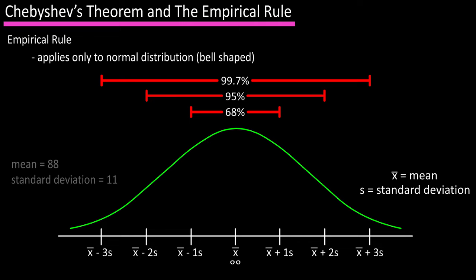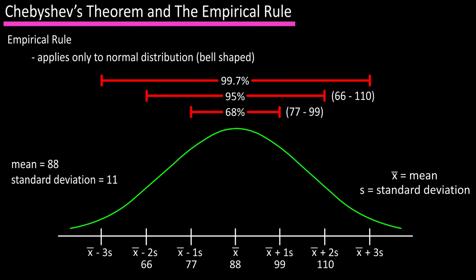So if we have a data set with a mean of 88 and a standard deviation of 11, approximately 68 percent of all data values will lie between 77 and 99, or within one standard deviation of the mean. Approximately 95 percent will lie between 66 and 110, or within two standard deviations. And approximately 99.7 percent of the data values will lie between 55 and 121, within three standard deviations of the mean.